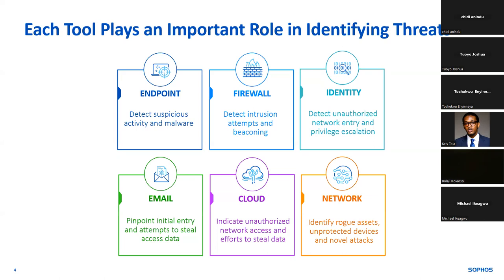Identity integration — such as EntraID, Okta, or Duo — helps manage who has access within your network. It can also help your SOC detect unauthorized network activity and misuse of privileges. Email integration helps identify initial entry by malware actors and attempts to steal data through malicious means. Cloud integration with AWS, Azure, or GCP allows you to import telemetry from those cloud environments into your SOC so analysts can identify and prevent attacks.